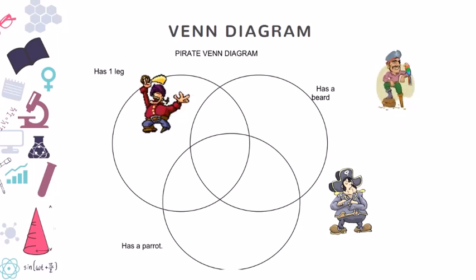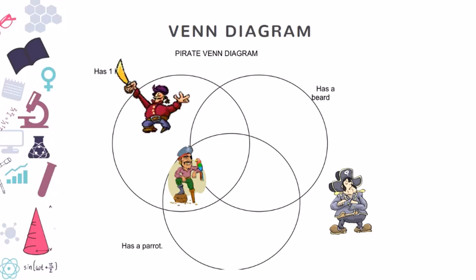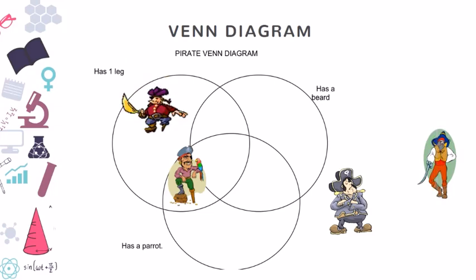Let's see the next guy. The guy has a parrot and also has one leg. So where will he belong? That's right. This guy has a parrot and also has one leg. Let's see the other guy. This guy has a beard. He doesn't have a parrot. And he has two legs. So he belongs here.